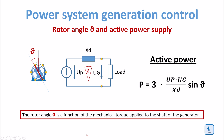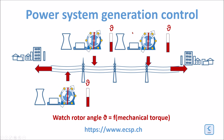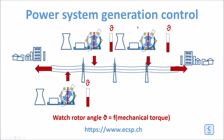The rotor angle theta is a function of the mechanical torque applied to the shaft of the generator. Here we see the three generators supplying power to the grid. You can also see the rotor angle between the axis of the rotor and the rotating magnetic field of the generators.